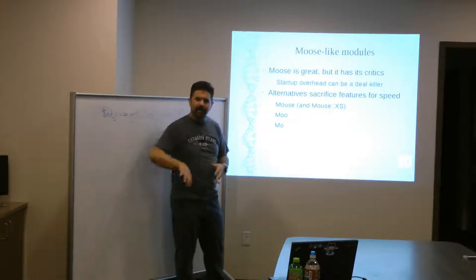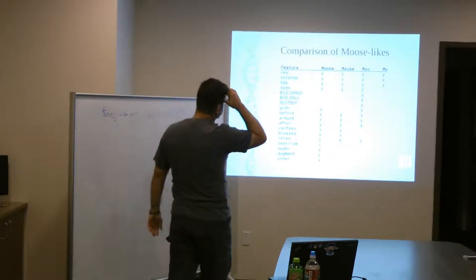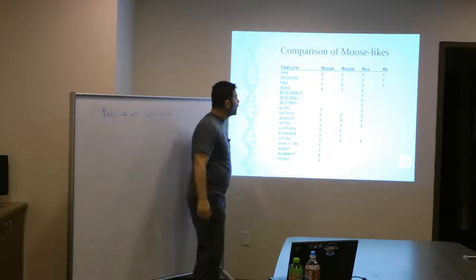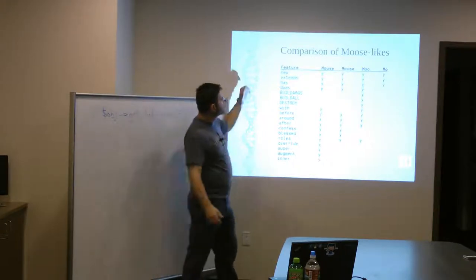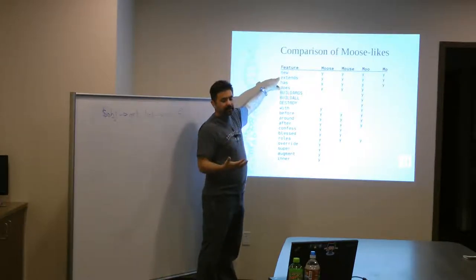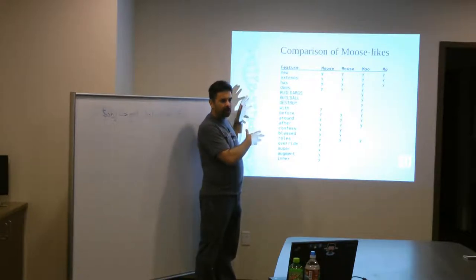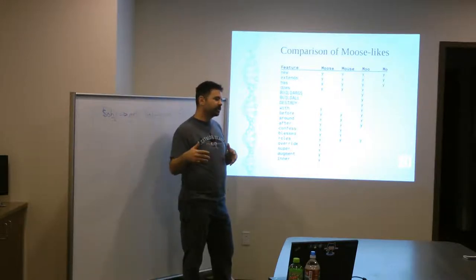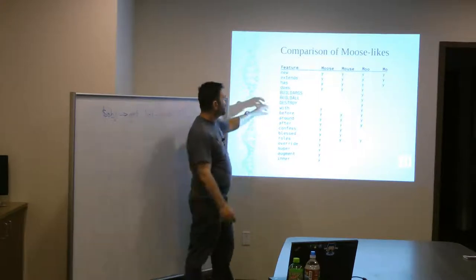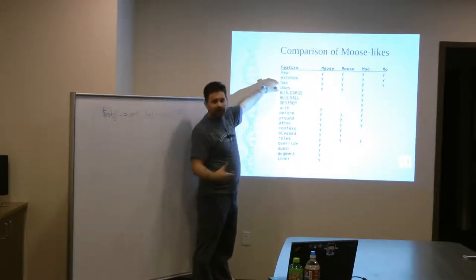Because each one of these strips something out that they say, well, we can live without this. I think the next slide. Yeah, here we go. This is a comparison of all the, you know, those four and what they give you. Some of this stuff will go right over your head. But essentially, you know, you have constructors. Extends is the idea that a parent-child inheritance. So if you have a class, a package called person, and then you have a class called manager, then instead of saying use base, which is what you would do in Perl 5, to say that this inherits from this, you say extends person. This manager is also a person.